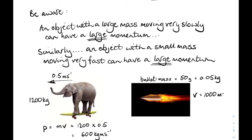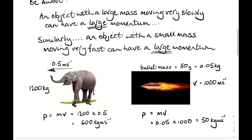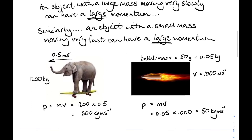For example, a 50 gram bullet travelling at 1000 metres per second — its momentum will be 0.05 times 1000, giving 50 kilogram metres per second.